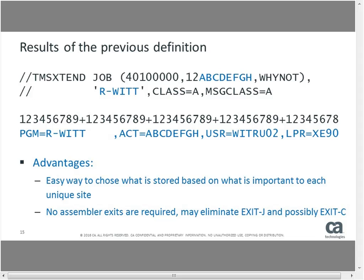This is an easy way to store user-specified data into the TMC user area on the volume record — useful if you want to track the creating SysPlex, SMS storage groups, security group, or accounting data. If you currently have an exit J, that's perfectly fine and you can continue using it. But if you want to switch to this method and eliminate your user exit, this gives you that option. This lets you control the 50-byte user area without coding an exit.